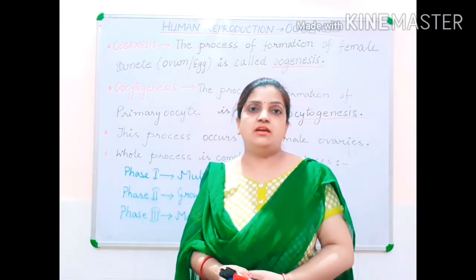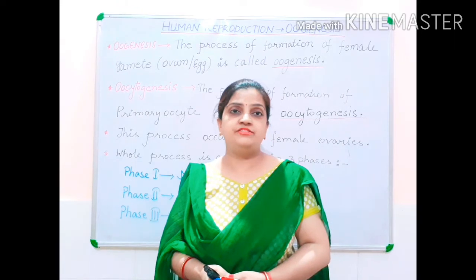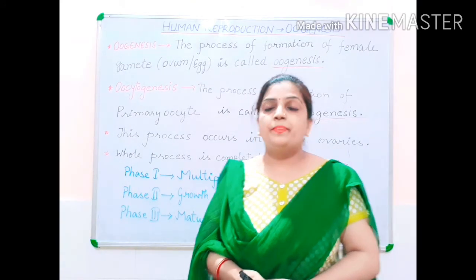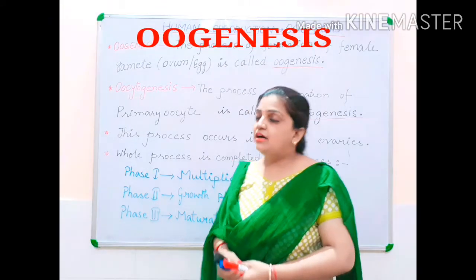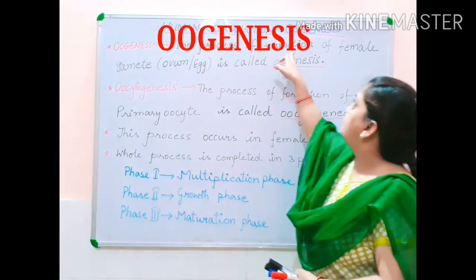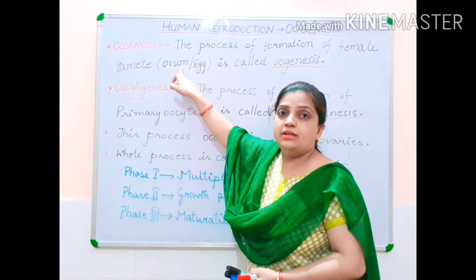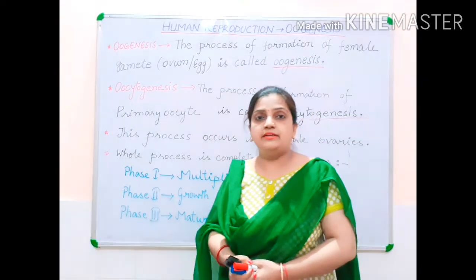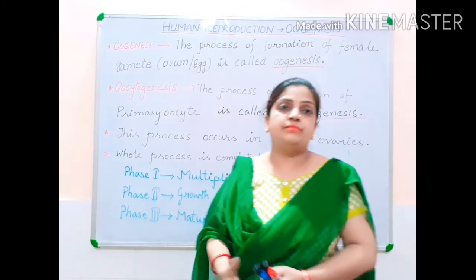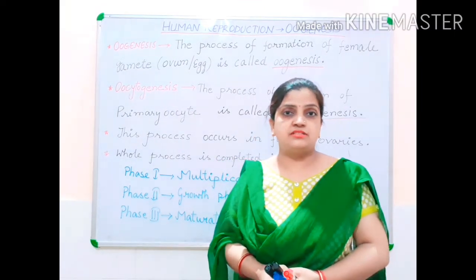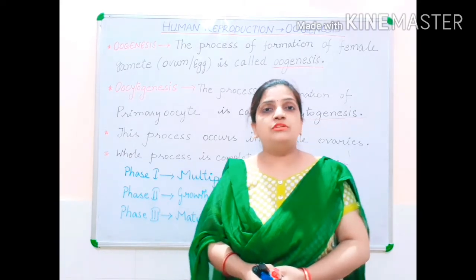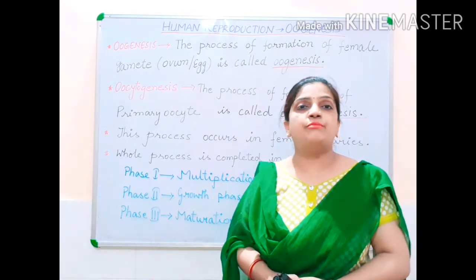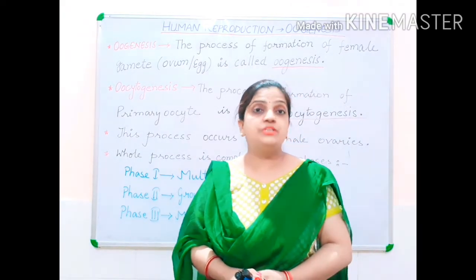Hello everyone, I am Nishu and today I am going to explain a new, very interesting but slightly complicated topic: oogenesis from the chapter human reproduction. Oogenesis is the process of formation of female gametes, which we call ovum or egg. Similar to spermatogenesis, gametes are formed in females because for fertilization, both sperm and ovum are needed.